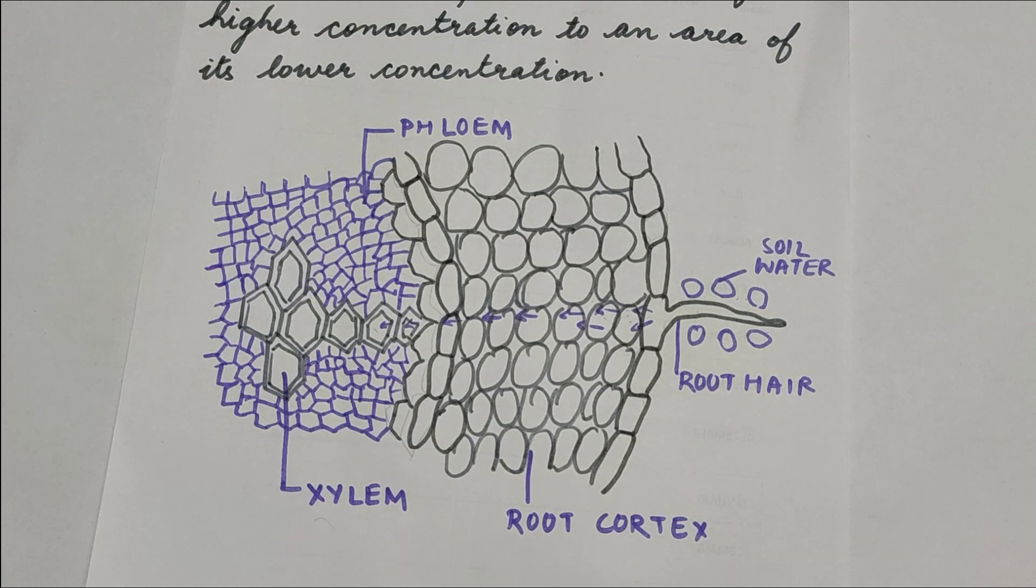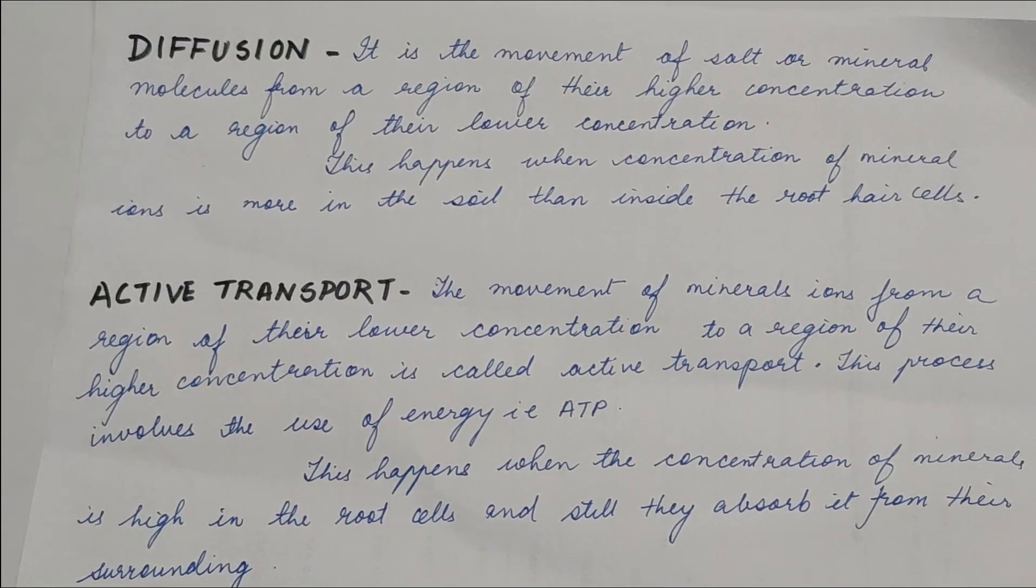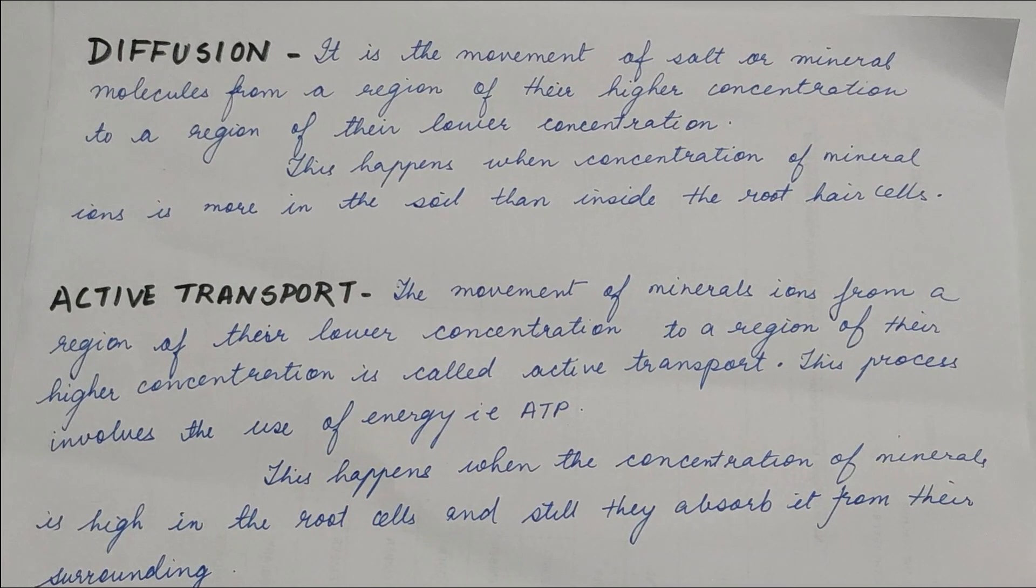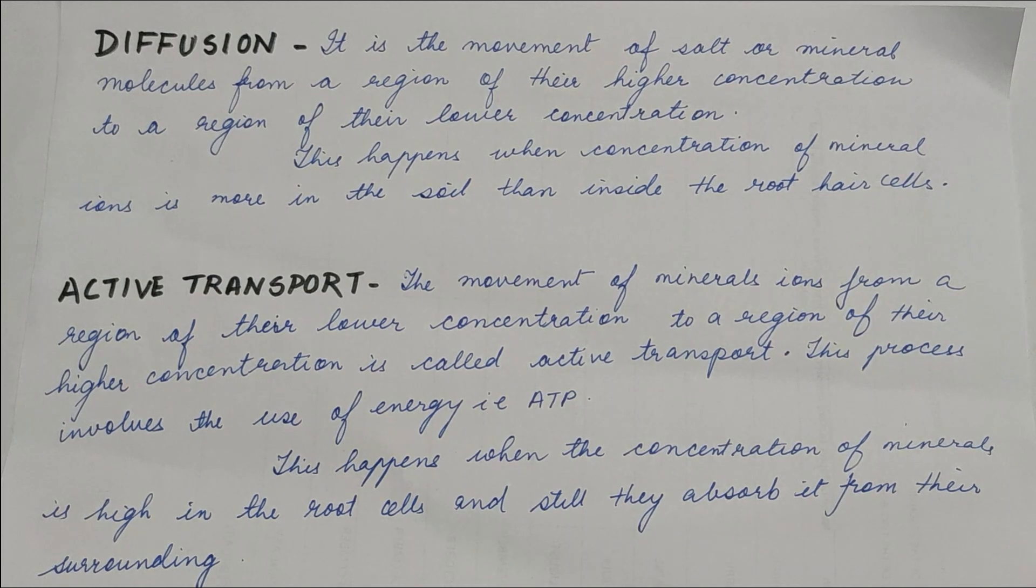Now I'll be talking about two other methods: diffusion and active transport. The definition of diffusion is movement of salt or mineral molecules from a region of their higher concentration to a region of their lower concentration. It is very much similar to osmosis.